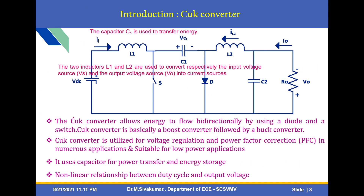This simple diagram shows the Ćuk converter. The Ćuk converter allows energy to flow bidirectionally — this is an important feature. It allows energy to flow bidirectionally by using a diode and a switch. The Ćuk converter is basically a boost converter followed by a buck converter. For this bidirectional application, we are using it with a renewable energy source and DC-to-DC converters for electric vehicles.